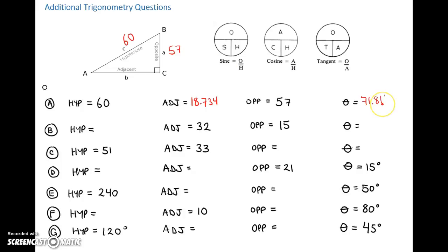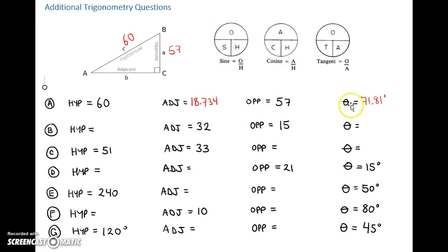We can tell right away when we saw that decimal place that wasn't right for the angle. We can see a large hypotenuse, a large opposite, and a shallow adjacent, so this angle is going to be quite steep. Okay, let's do the next one.